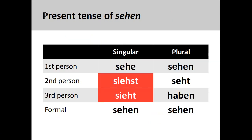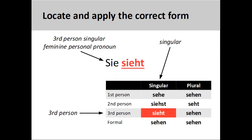The verb sehen, meaning 'to see,' is another example, this time using a strong verb. You will note that this conjugation pattern retains all the endings found in the conjugation pattern for regular verbs, but that the verb stem in the second and third person singular shows a vowel change from ee to the double vowel ie. The sentence sie sieht, meaning 'she sees,' shows the correct third person conjugation.